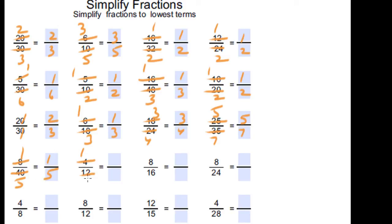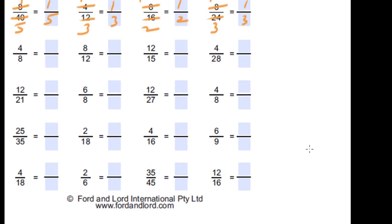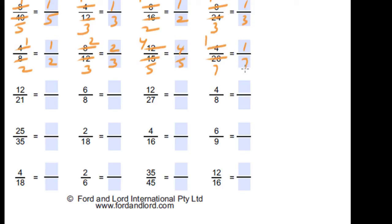4 times 1 is 4 and 4 times 3 is 12, so 1 over 3 is the simplified form of 4 over 12. 8 times 1 is 8 and 8 times 2 is 16, so 1 over 2. 8 times 1 is 8 and 8 times 3 is 24, so 1 over 3. 4 times 1 is 4 and 4 times 2 is 8, so 1 over 2. 4 times 2 is 8 and 4 times 3 is 12, so 2 over 3. 3 times 4 is 12 and 3 times 5 is 15, so 4 over 5. 4 times 4 is 16, so 1 over 7. 3 times 4 is 12 and 3 times 7 is 21, so 4 over 7. 2 times 3 is 6 and 2 times 4 is 8, so 3 over 4.